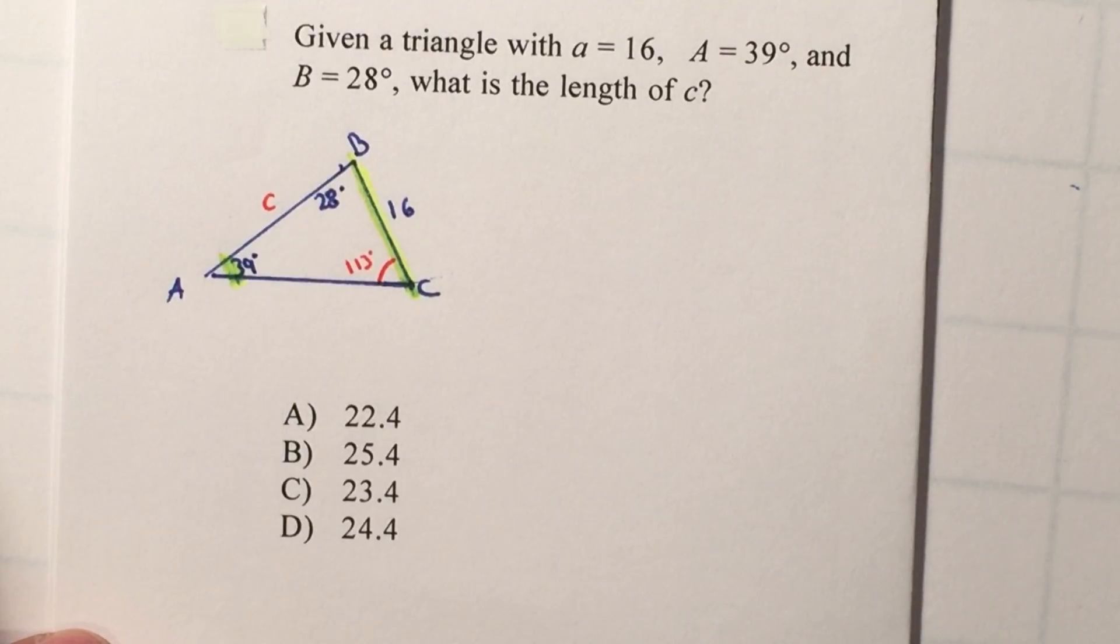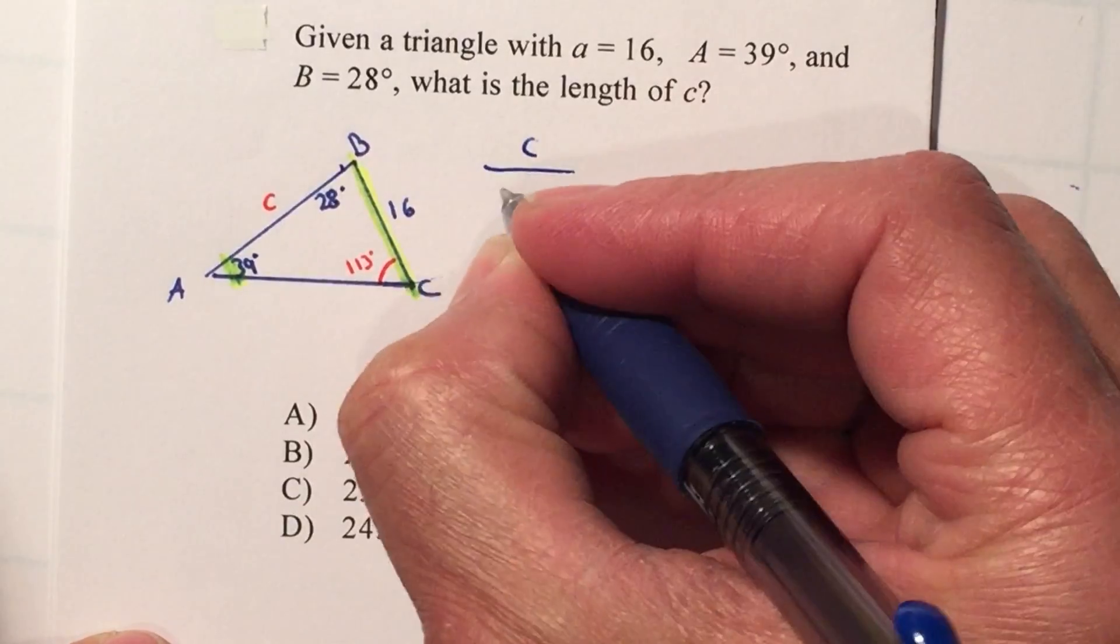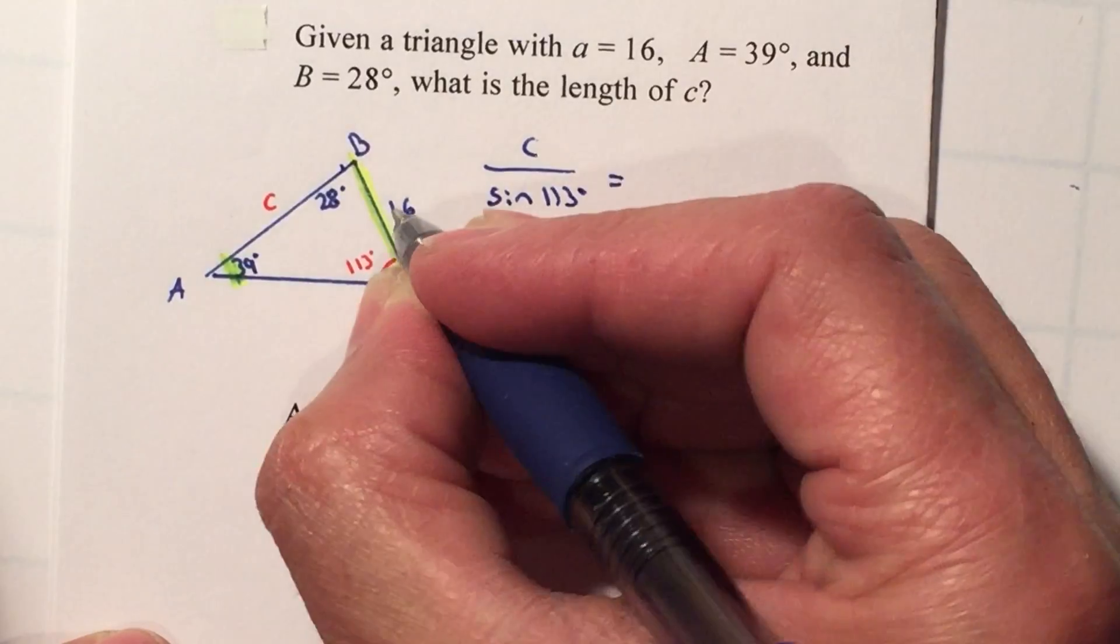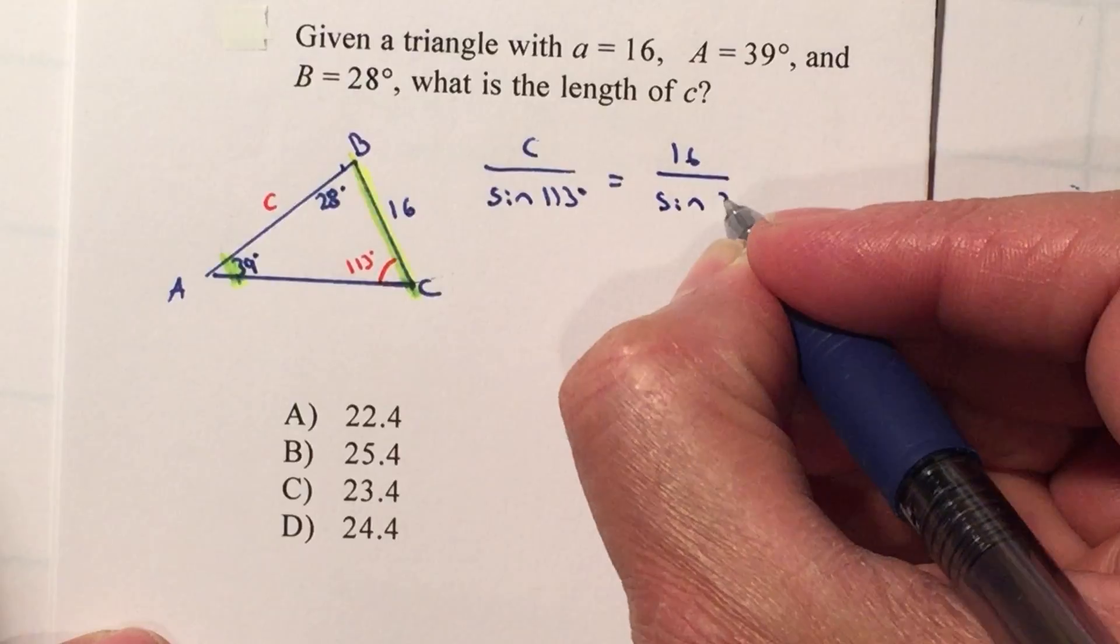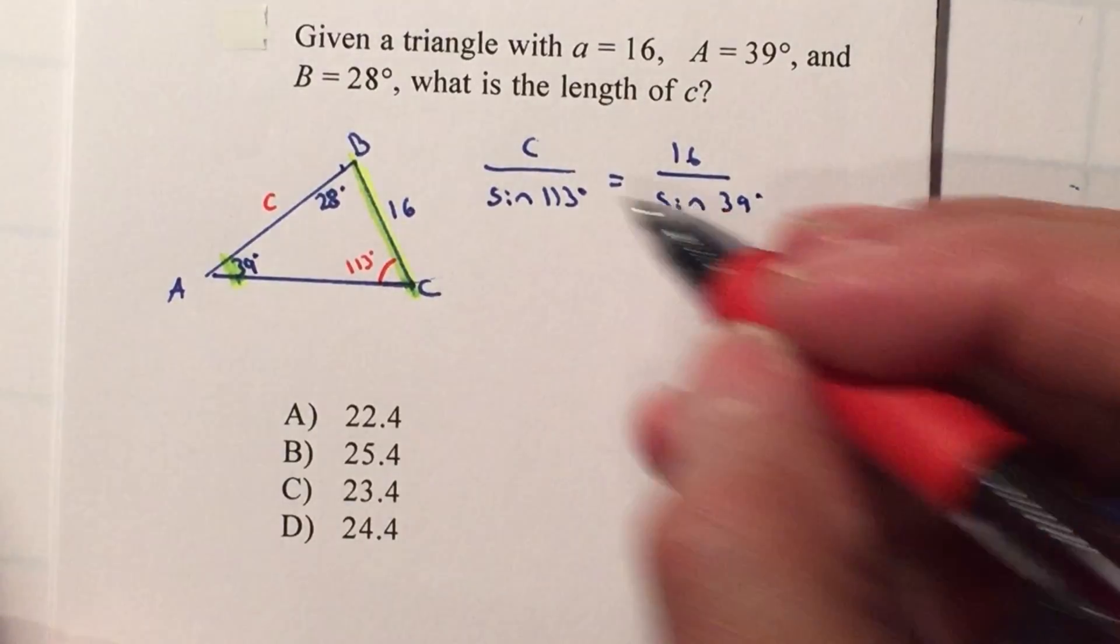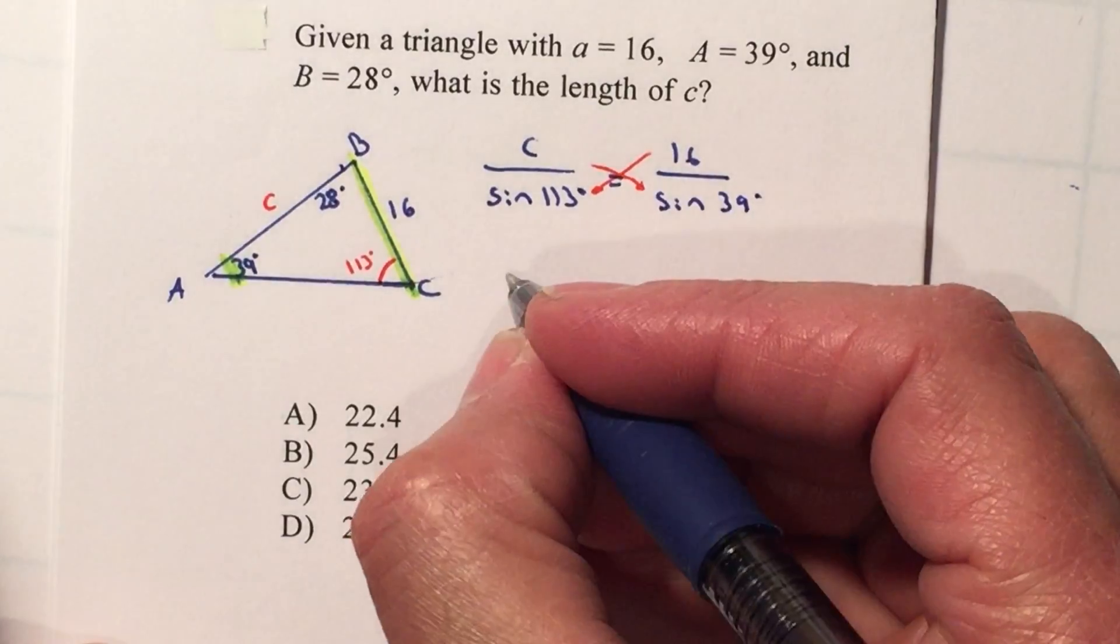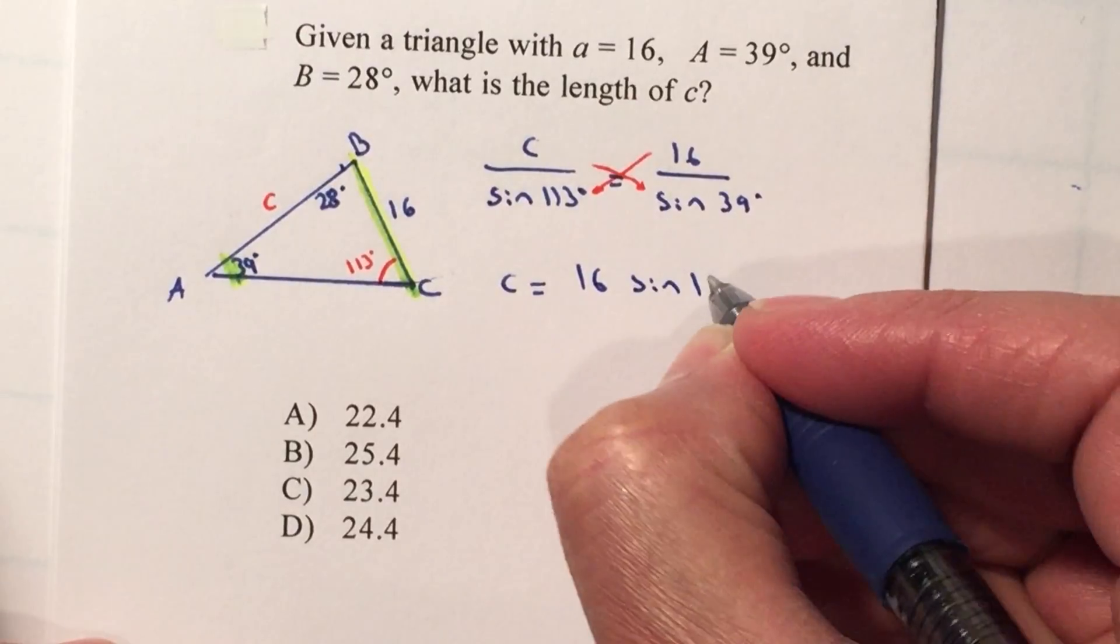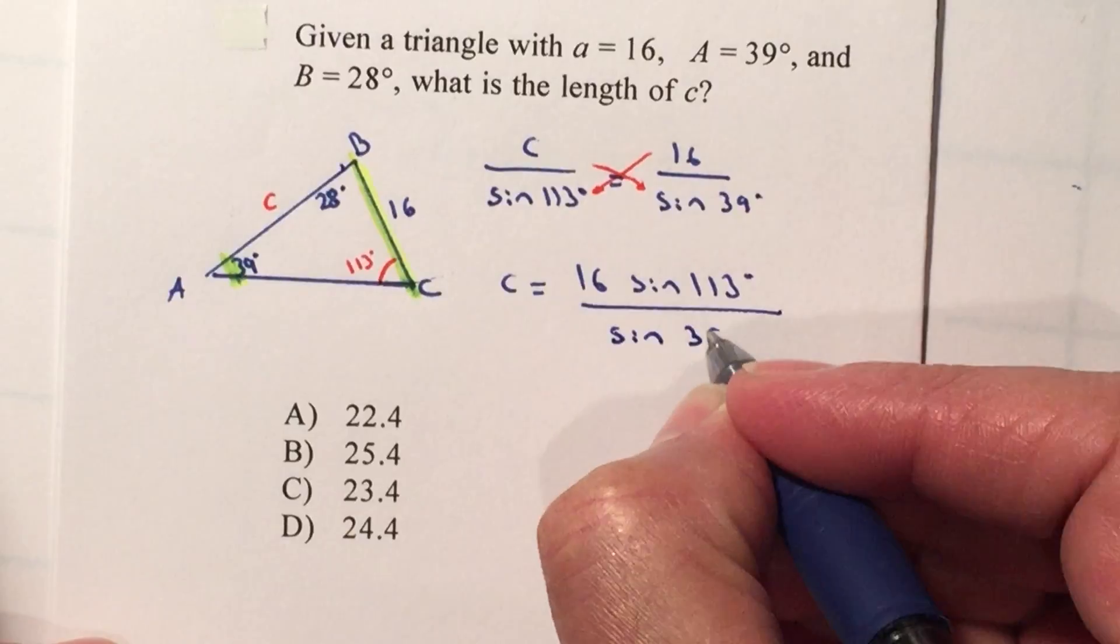Now I can use Law of Sines. So C over the sine of 113 degrees is equal to 16 over the sine of 39 degrees. From here I'm going to cross multiply and divide. I'm going to do everything in one step. So C is equal to 16 multiplied by the sine of 113 degrees over the sine of 39 degrees.